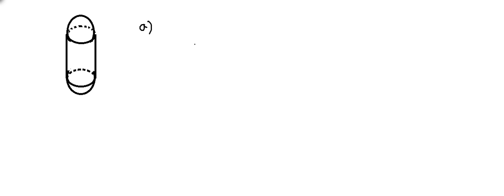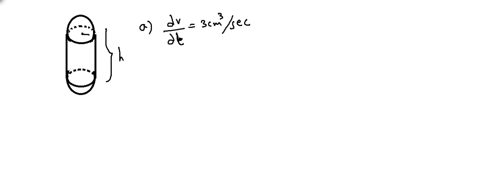The volume is increased at a rate of three centimeters cubed per second, so dV/dt equals three cm³ per second — meaning volume increases by three cm³ every one second. The radius is always half the height of the cylinder. This is the height of the cylinder, and this is the radius. The radius increases but always remains half the height.